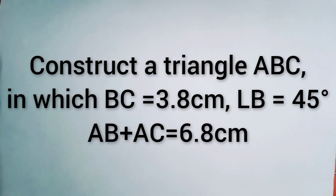Construct a triangle ABC in which BC is equal to 3.8 cm, angle B is equal to 45 degrees, and AB plus AC is equal to 6.8 cm.